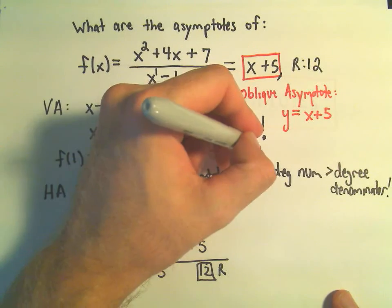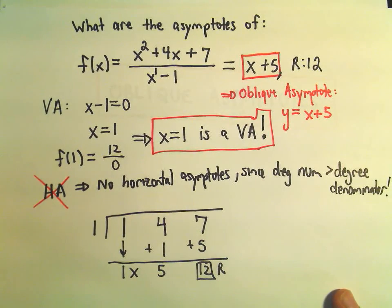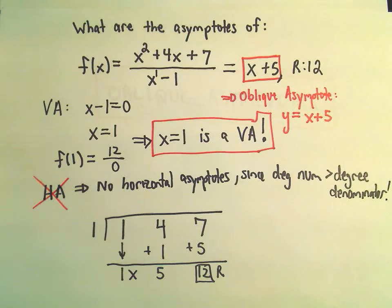Again, we said there were no horizontal asymptotes at all, and then we've got our oblique asymptote of y equals x plus five.